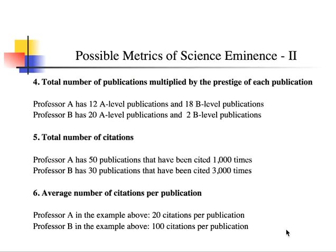The fourth possible way to measure scientific eminence is a weighted additive rule: the total number of publications multiplied by the prestige of each publication. So you take into account all publications but weigh them by the prestige of each outlet.